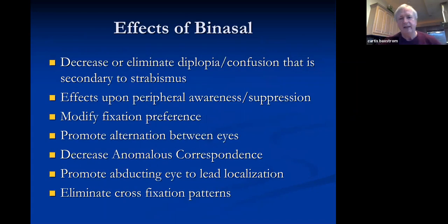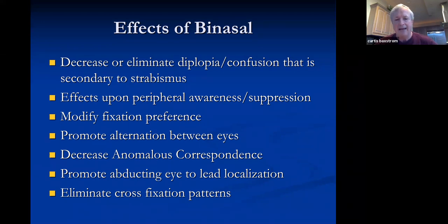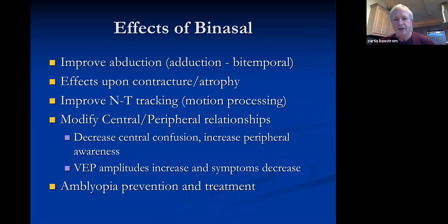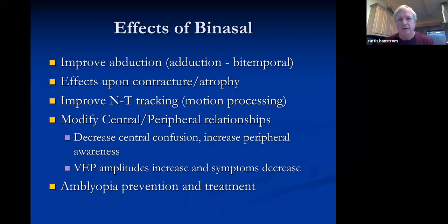In summary, the effects of a binasal include: decreasing or eliminating diplopia or confusion, less likelihood of developing suppression, more emphasis on peripheral awareness, modifying fixation preference for right versus left ET, promoting alternation, decreasing anomalous correspondence, promoting the abducting eye to lead localization, and eliminating cross-fixation patterns. The binasal also helps improve abduction — for a recent cranial nerve six paresis, patching the eye prevents recovery and can lead to muscle contracture and atrophy; the binasal prevents that. It also improves nasal-to-temporal tracking and modifies central-peripheral relationships, as well as serving in amblyopia prevention and treatment.